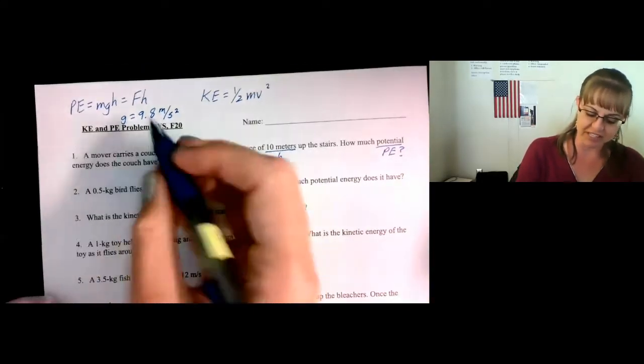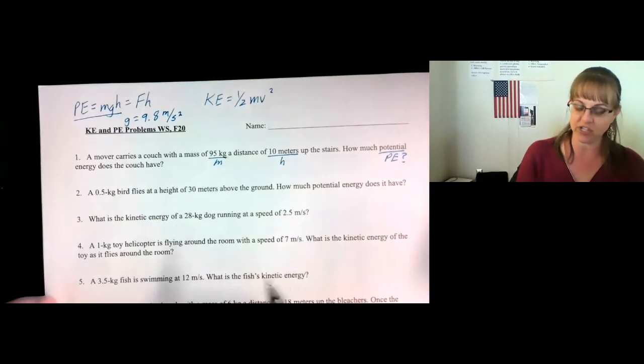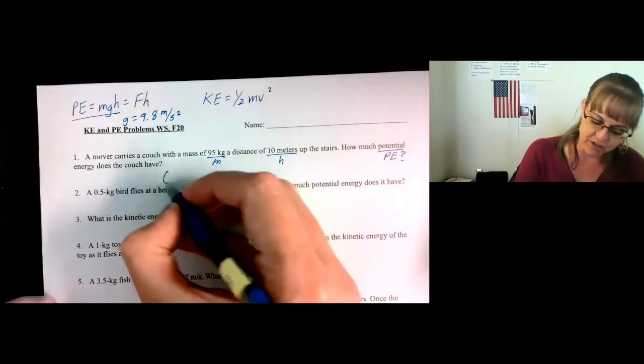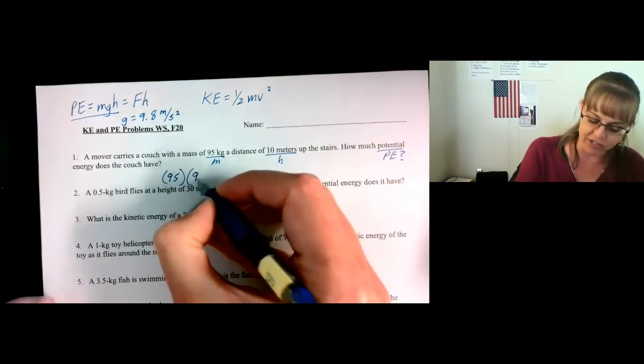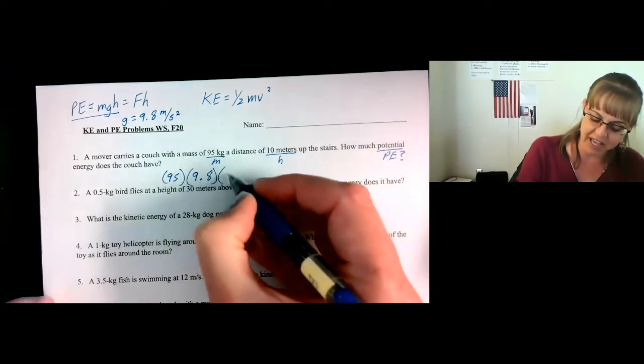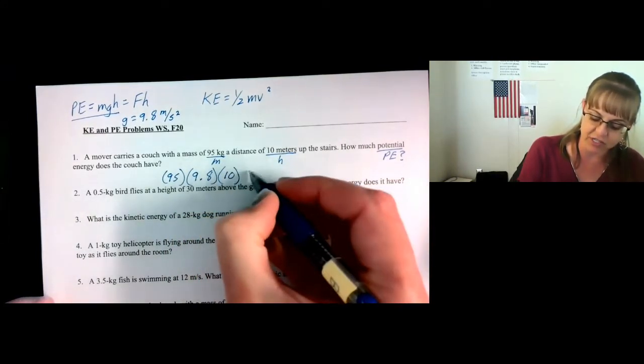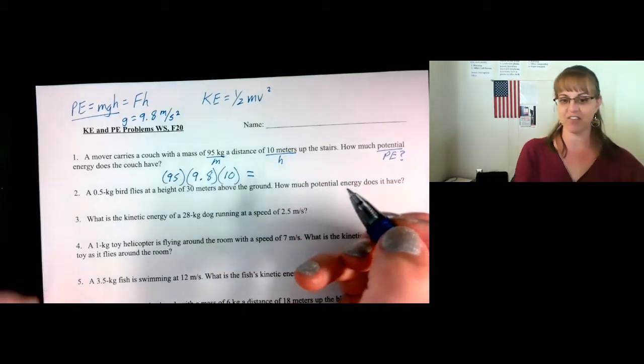Therefore, we can just plug this in. We need this part of the equation right here. So potential energy is the mass of 95 times acceleration due to gravity, 9.8, times the height of the stairs, which is 10 meters. Do your math, and you'll have your answer.